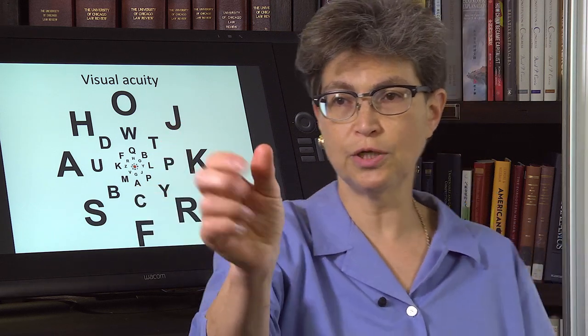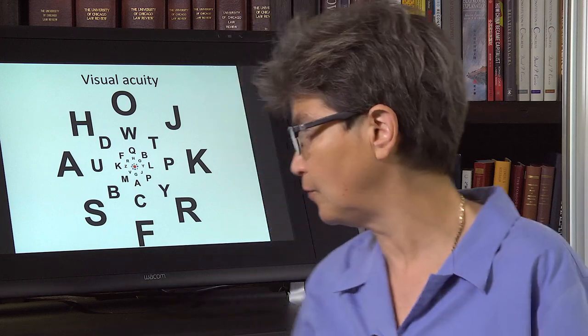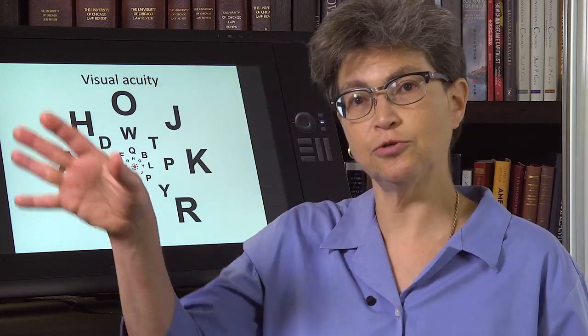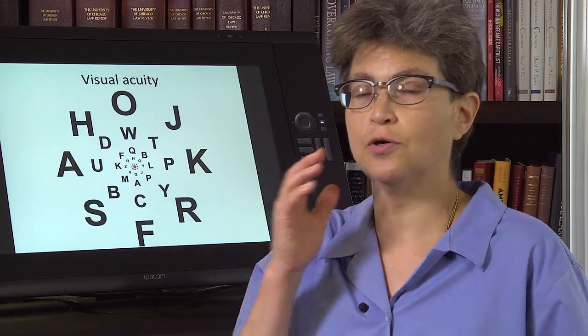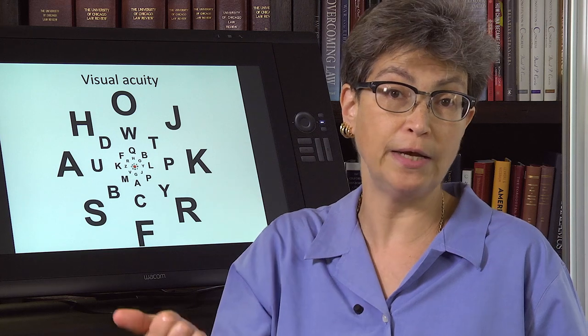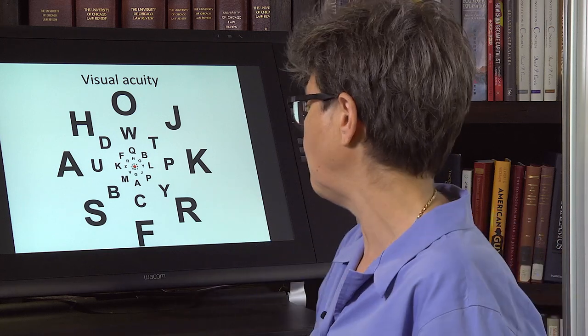Central vision is just a little stretch of space. Outside of central vision, your ability to detect writing is very poor.